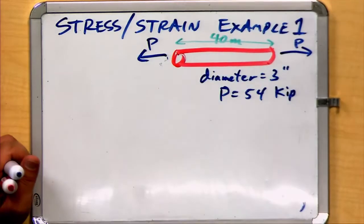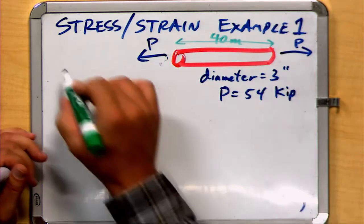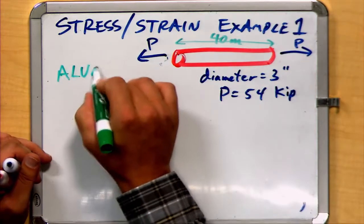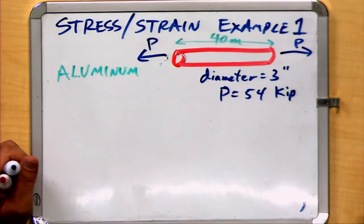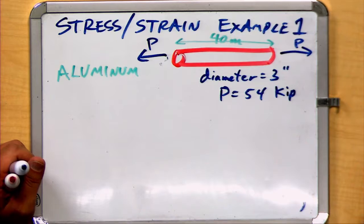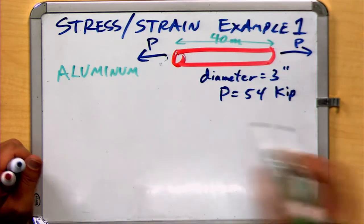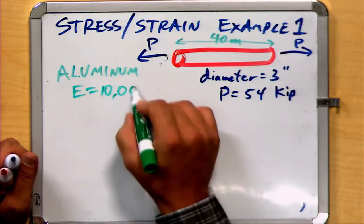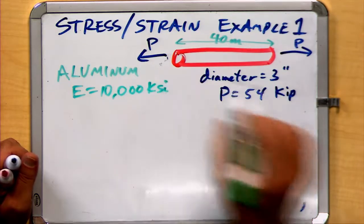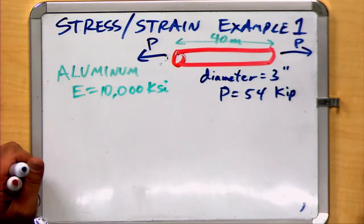Let's consider an example of the relationship between stress and strain. In this case, we have a rod made out of aluminum. I would have to use some sort of materials textbook or the internet to determine the modulus of elasticity of aluminum, which has a value of 10,000 KSI, which is kilopounds per square inch.